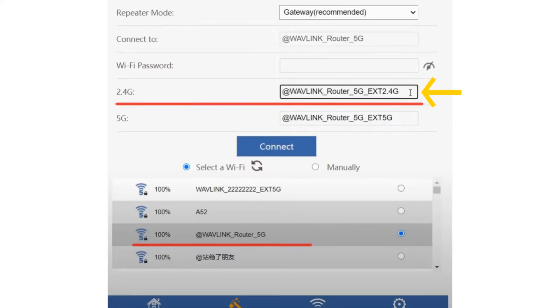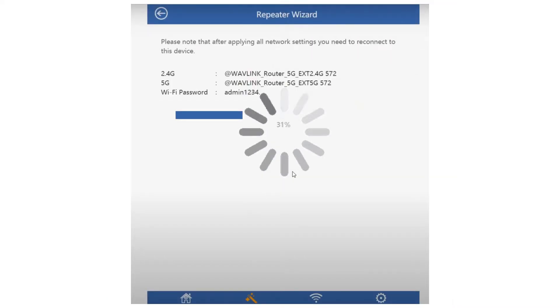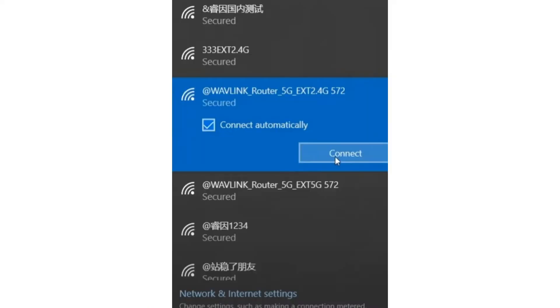Once you hit apply, it will take around 60 seconds for the outdoor extender to connect with your router. After successful setup, you will see the extender network in your WiFi list.